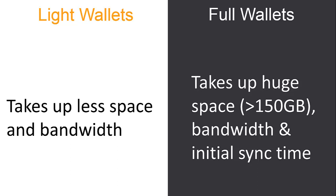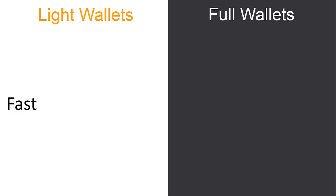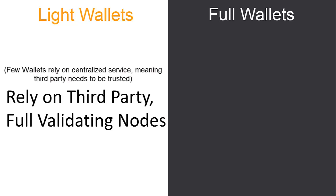Full wallets take up a huge amount of space, bandwidth, and initial sync time. Once you install a full wallet, it has to download the entire transaction history that's ever happened on the blockchain. For example, the Bitcoin blockchain is more than 150 gigabytes, so setting up takes a lot of time. Light wallets, by contrast, require very minimal space and are comparatively much faster.